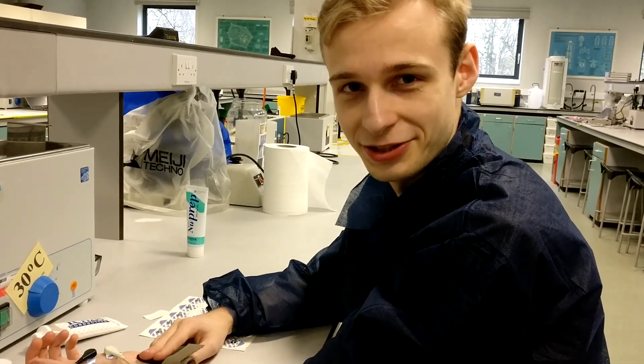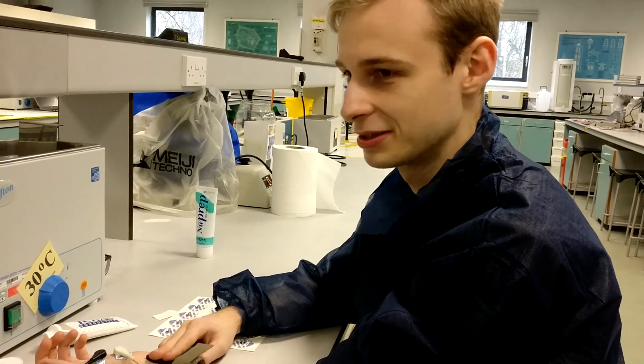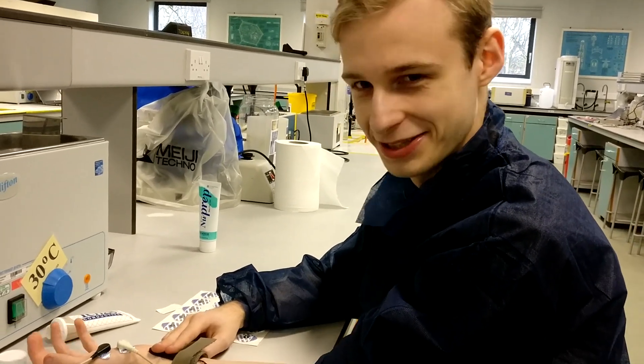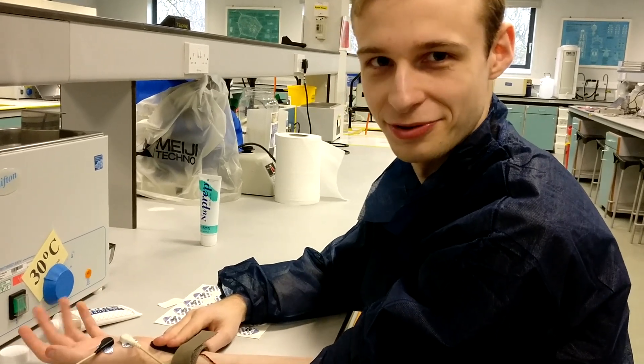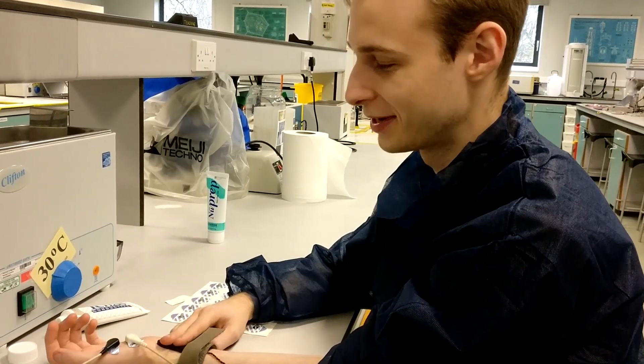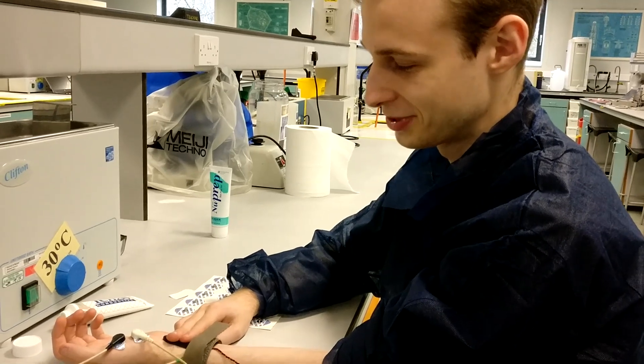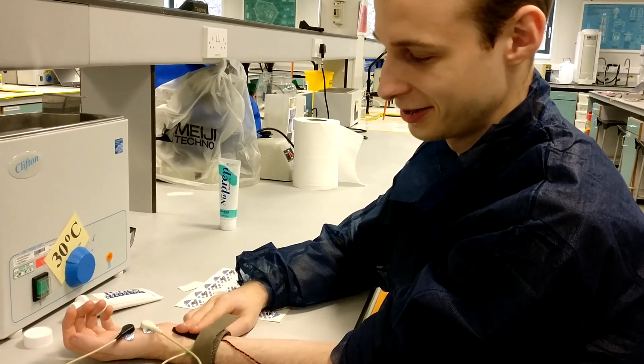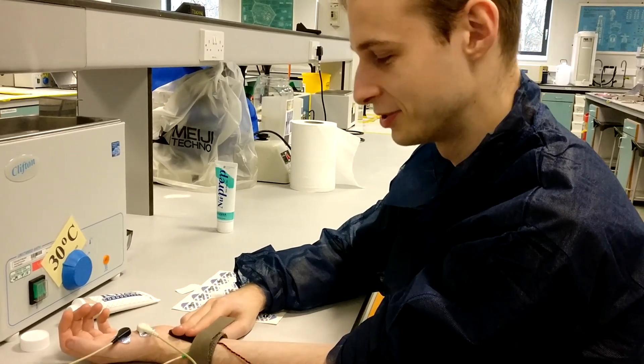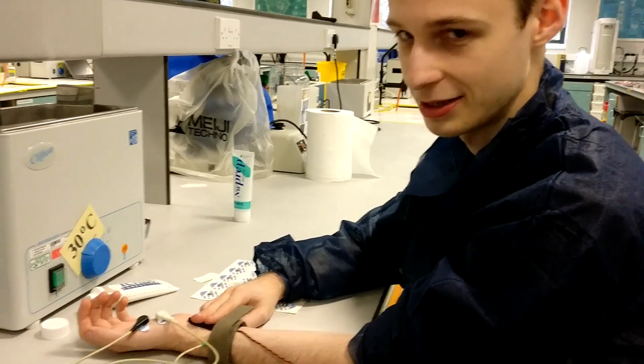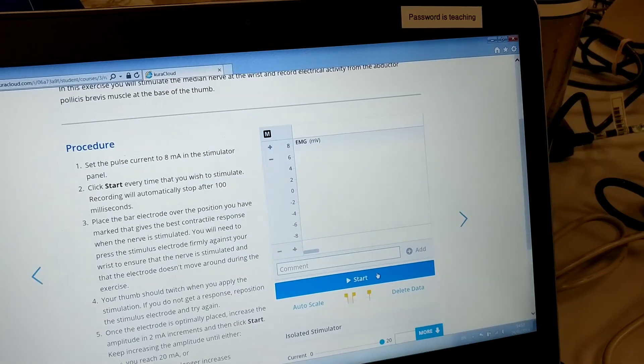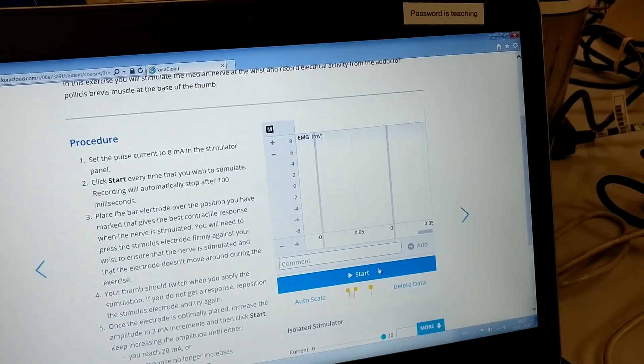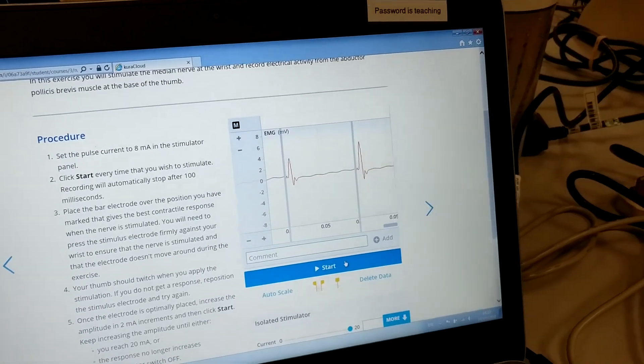You might have seen the electromyography we were doing last week in these labs. This week we're doing nerve conduction. I'm having electric current pass through my median nerve in the middle of my arm at the moment, which is causing my thumb to twitch completely beyond my control. We're using this kit down here and should, with any luck, see the electrical activity moving through the muscle in a compound wave.